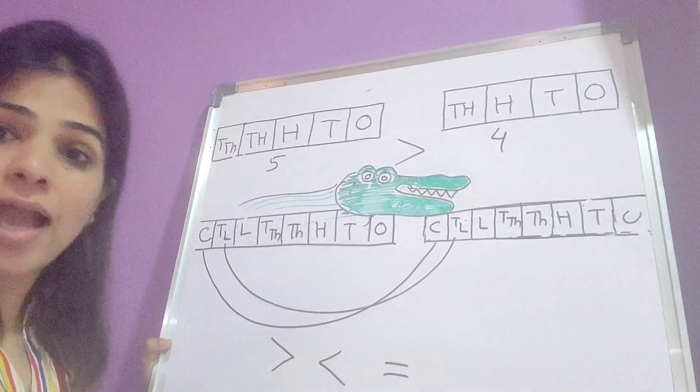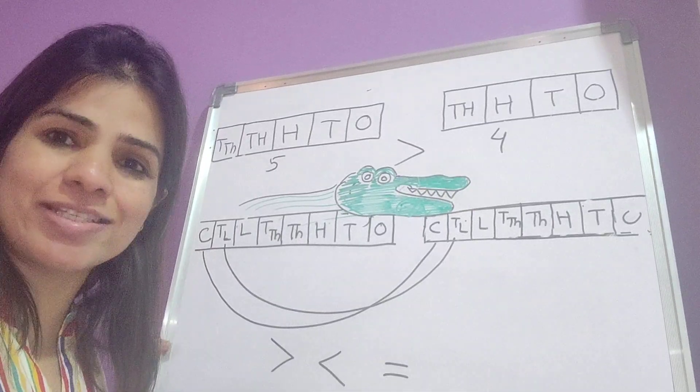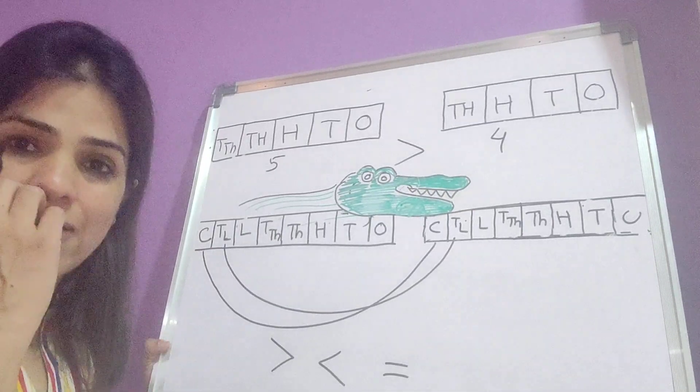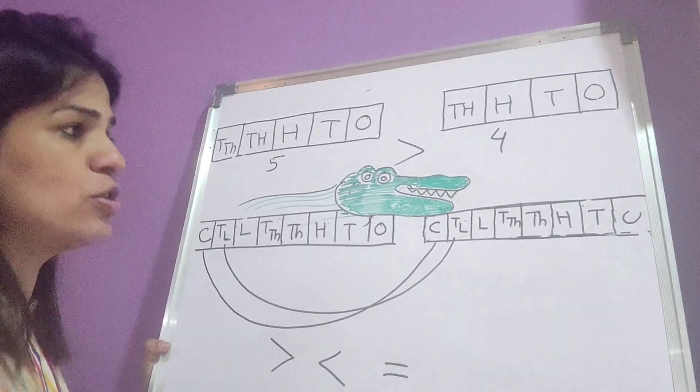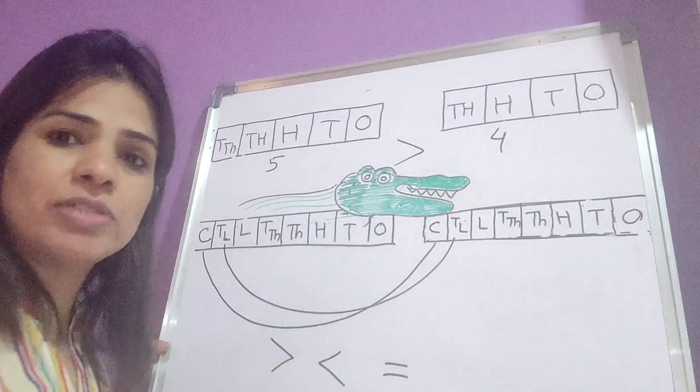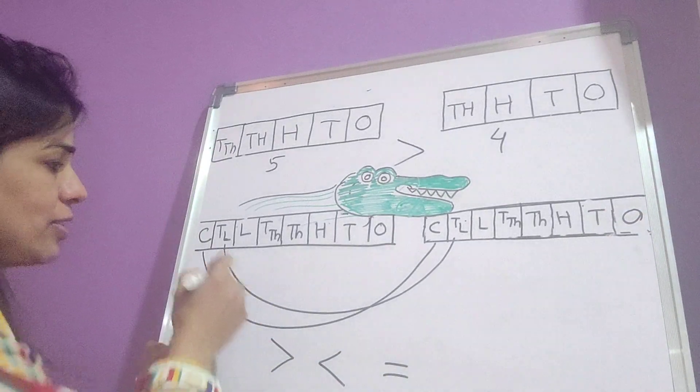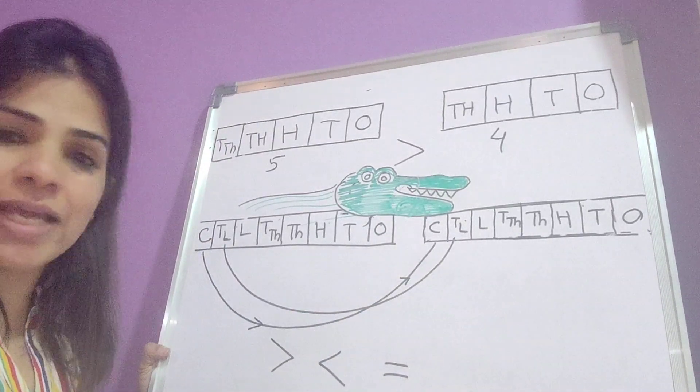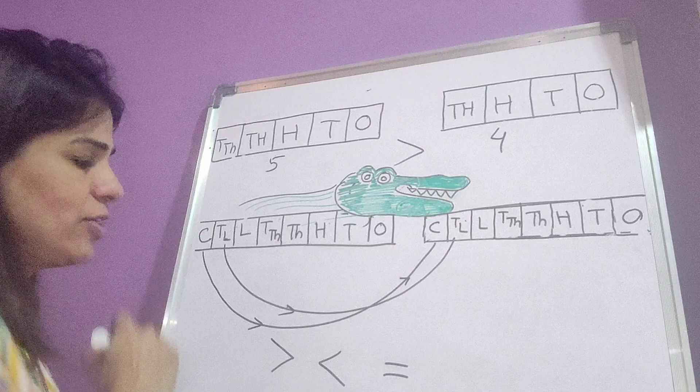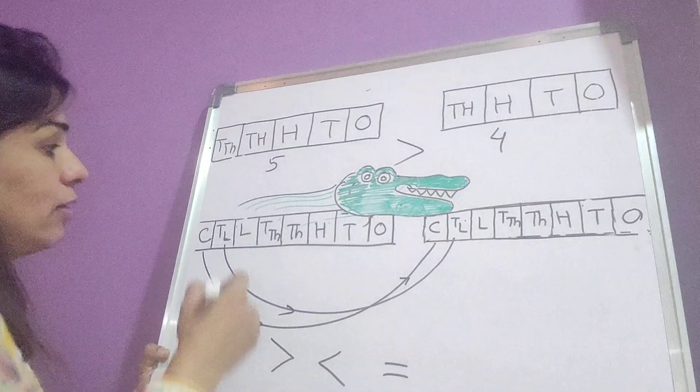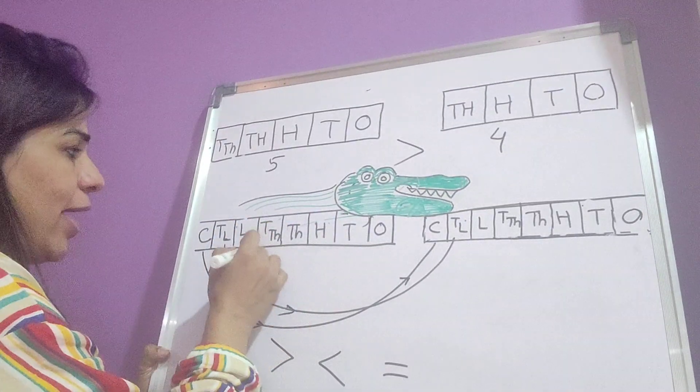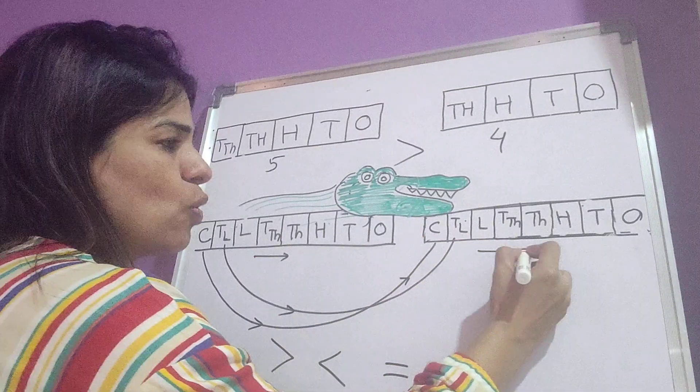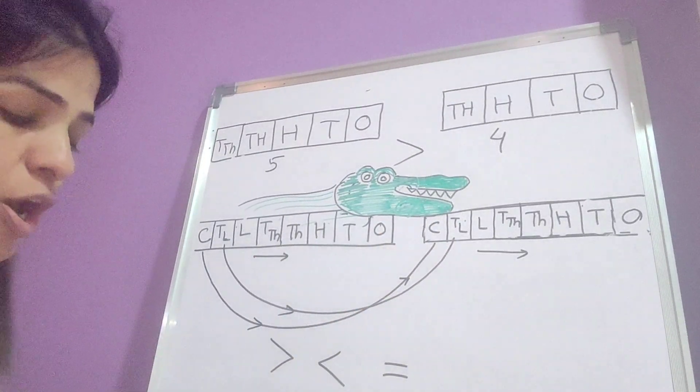Same thing as you have grown ahead in your number system, you have started writing the numbers up to crores. So here, the same type of comparison takes place between the crores. If they fall to be the same digit, you go ahead with ten lakhs, then ahead with lakhs, and so on, and do the comparison.